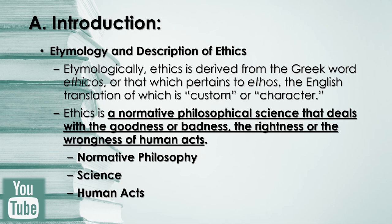We should not forget that in this description of ethics, what is analyzed is human act, in contradistinction with acts of man. A human act is an act which proceeds from the deliberate free will of man, in contrast to acts of man, which are acts that do not proceed from the deliberate free will of man. To constitute a human act entails the presence of three elements: knowledge, freedom, and voluntariness.